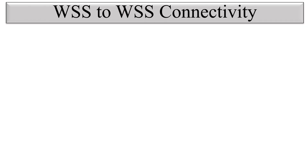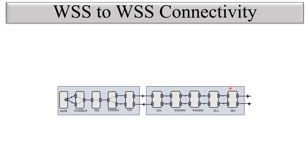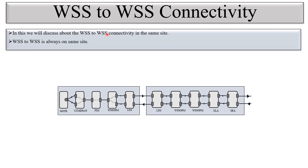Hello friends. In today's video we will discuss WSS-to-WSS connectivity in the WDM signal flow. I have taken a circuit as a reference in which we will trace the WSS-to-WSS connectivity. WSS-to-WSS connectivity is always on the same side because both WSS units are physically located on the same side. We will discuss how WSS and WSS are physically connected and through which ports.